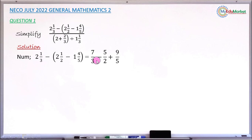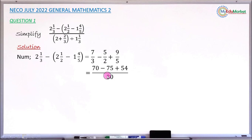Next, perform the subtraction and addition using the LCM of denominators 3, 2, and 5. The LCM is 30. So 3 into 30 is 10, times 7 gives 70. Then 2 into 30 is 15, times 5 gives 75 — copy the minus. Then 5 into 30 is 6, times 9 gives 54 — copy the plus. So we now have 70 minus 75 plus 54.